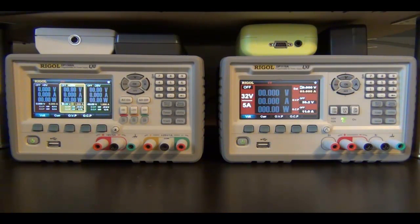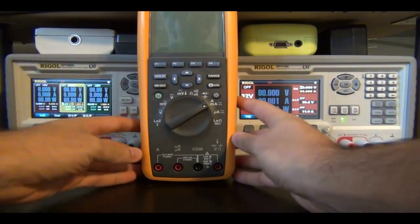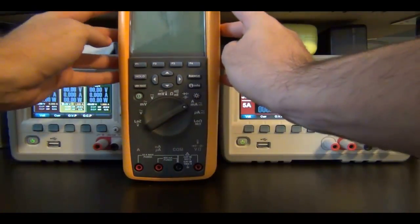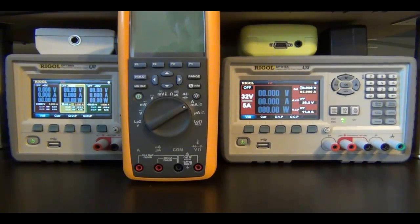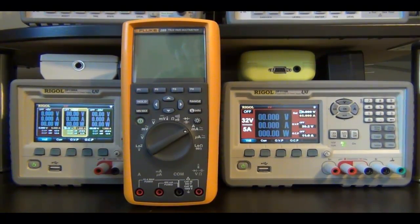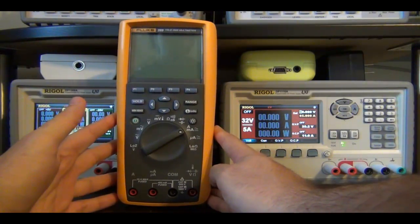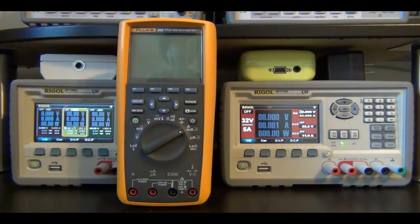I'm going to test the accuracy of the voltage and current readout by using a Fluke 289. This is a brand new Fluke 289, so it's fully calibrated and should give us very accurate readings. The Fluke 289 is possibly the world's greatest handheld multimeter, so we should be able to get very accurate measurements from this instrument.